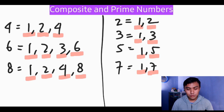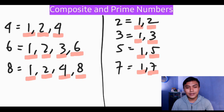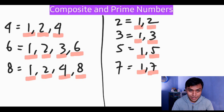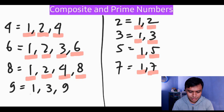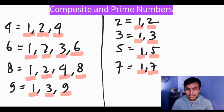Let's look at nine. The factors of nine are one, three, and nine — more than two factors, so we put it in the composite column: one, three, and nine. We underline the factors as well.